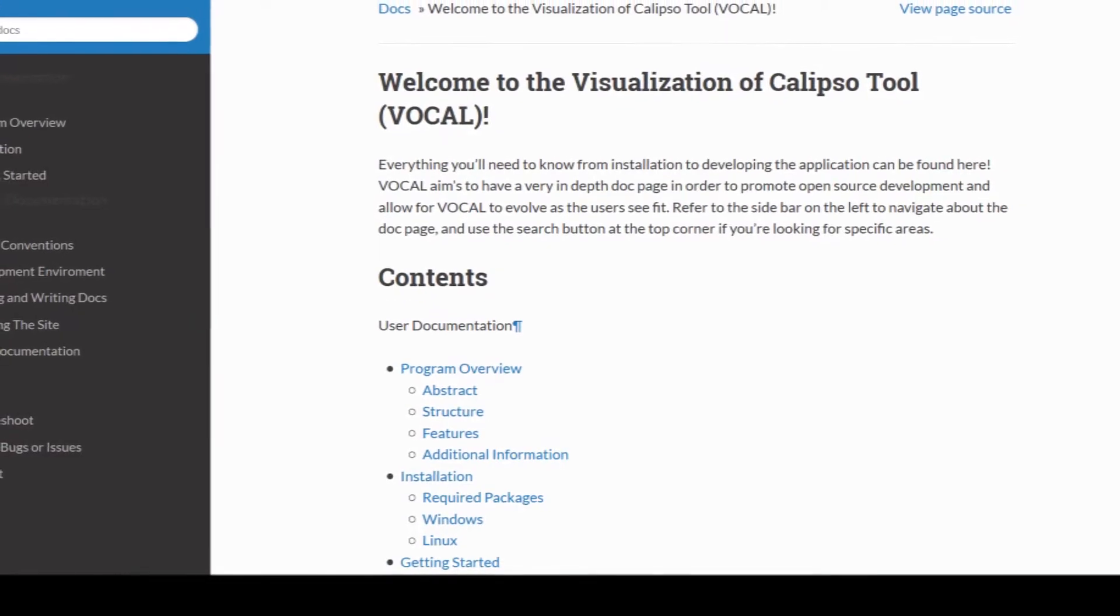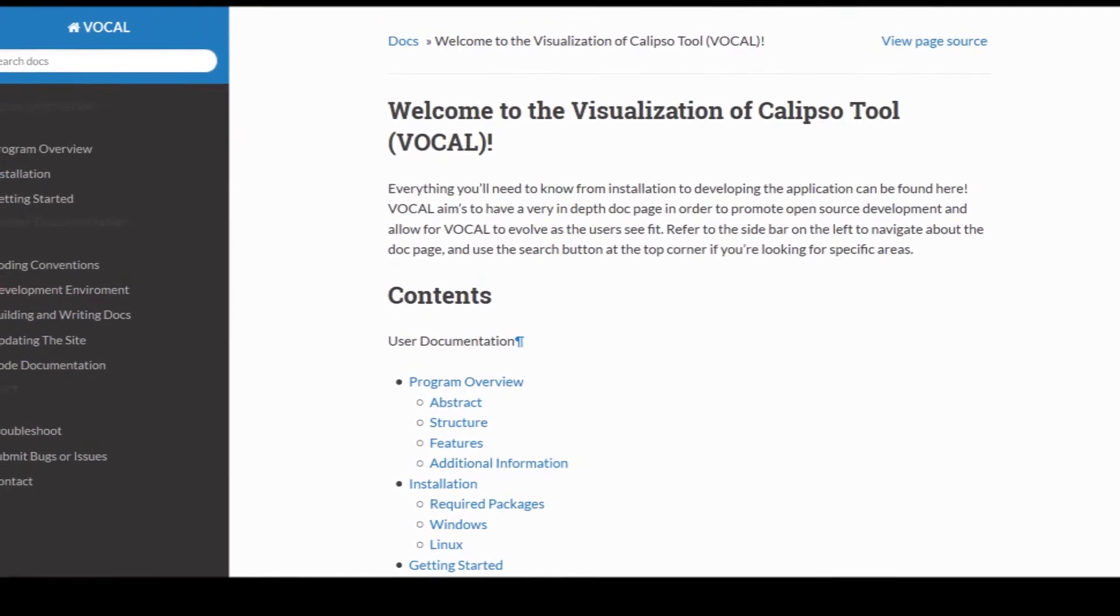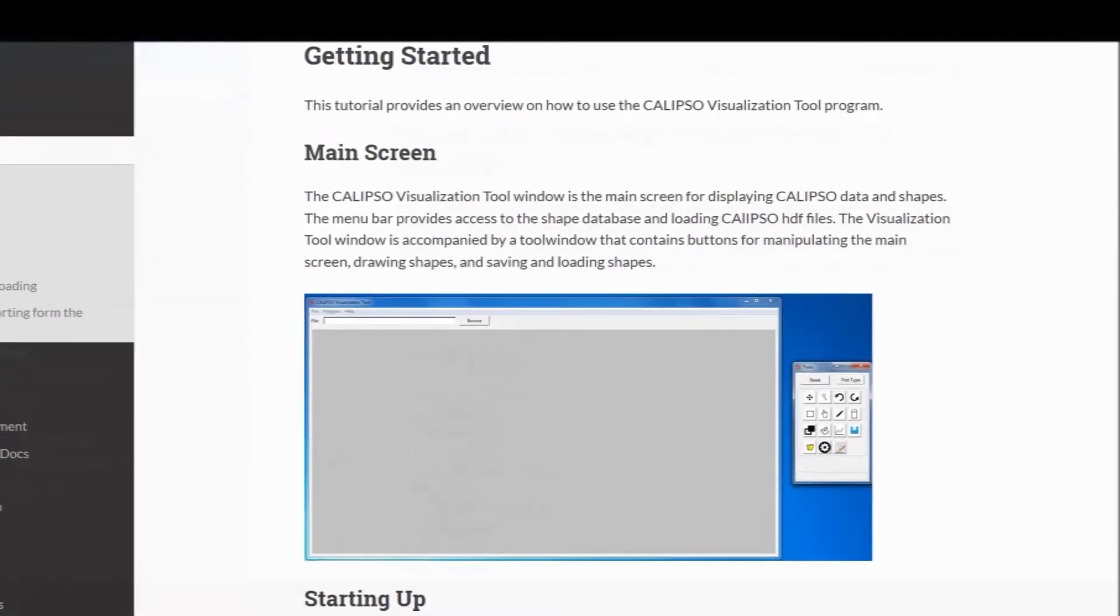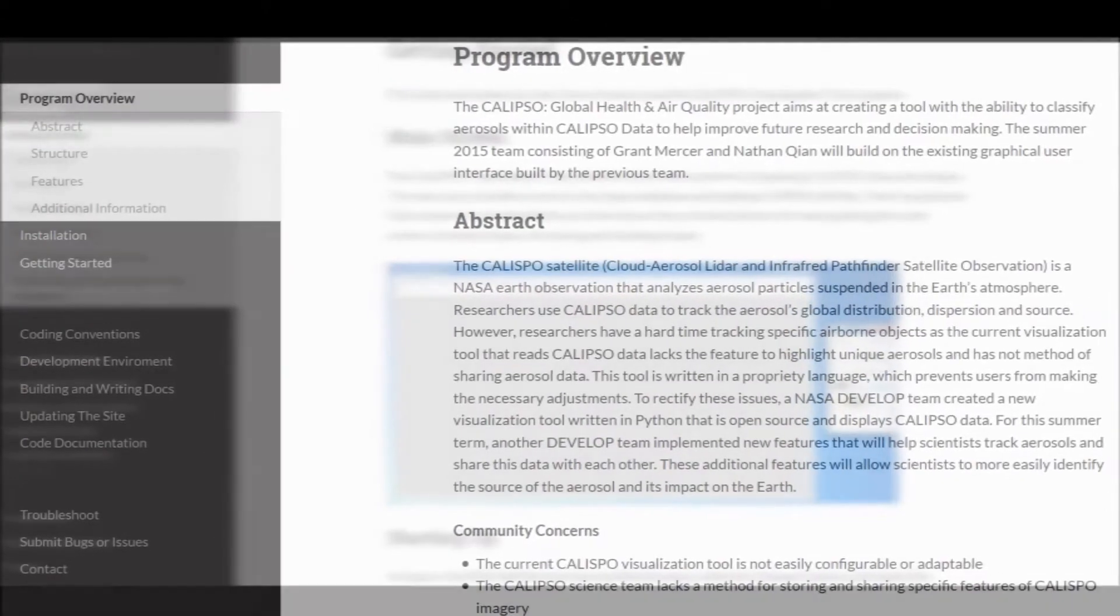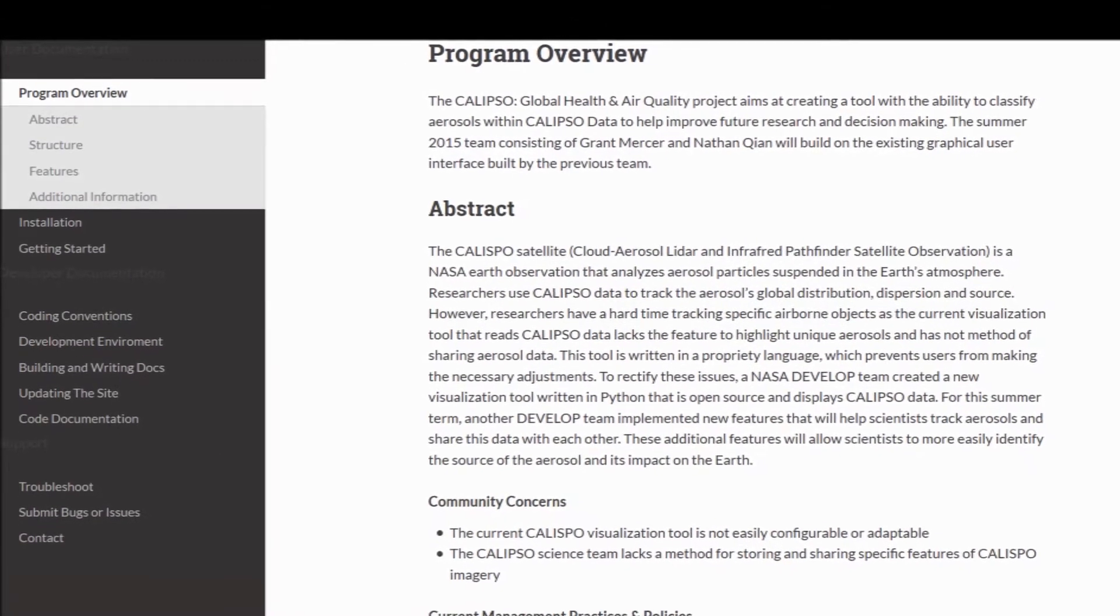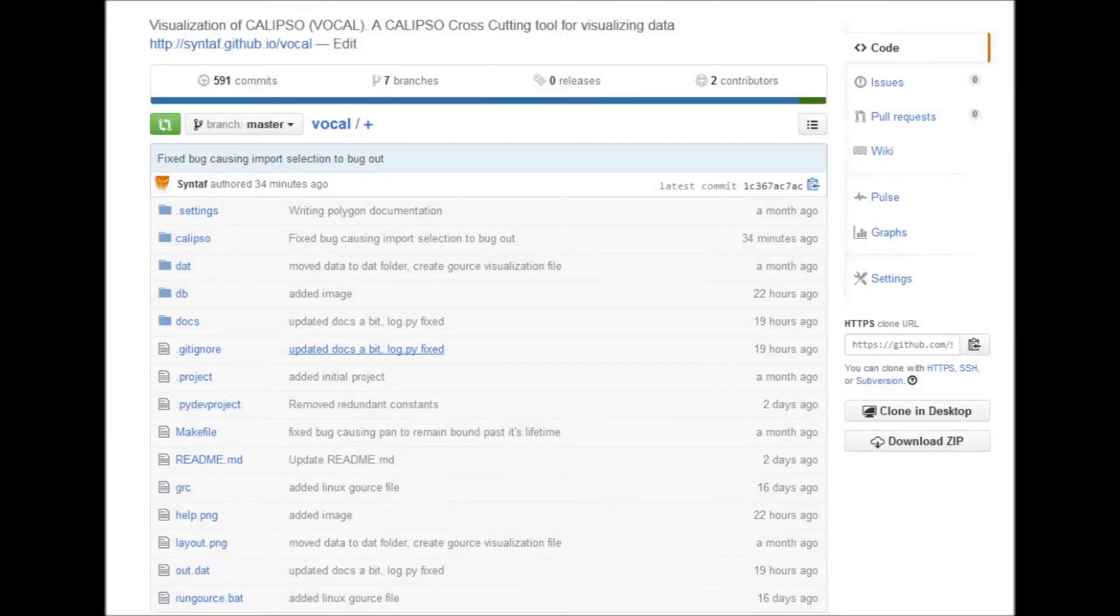That's where the Calypso cross-cutting team comes in with Vocal. Vocal is developed as the successor to the current IDL visualization tool, being developed in Python 2.7 and built on an open-source model. The application is designed for the community and by the community. Vocal takes future development in mind and promotes open-source collaboration for developers taking part long after its initial release.